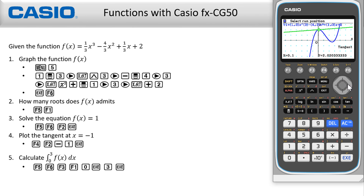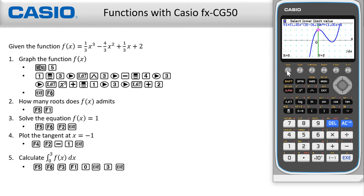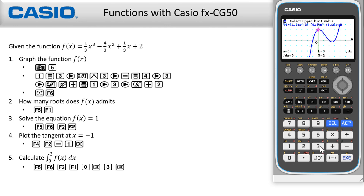Finally, to find the integral of f(x) dx from 0 to 3, press F5, then navigate to other options by pressing F6, and choose the integral option F3. Go for the first option F1, and set the lower and upper bounds by selecting 0, Execute, and then 3, Execute.